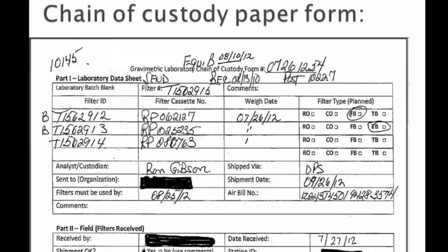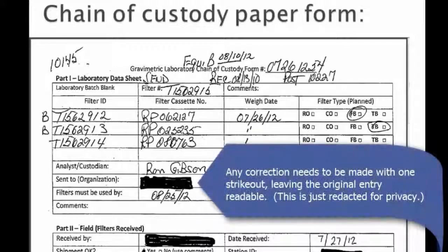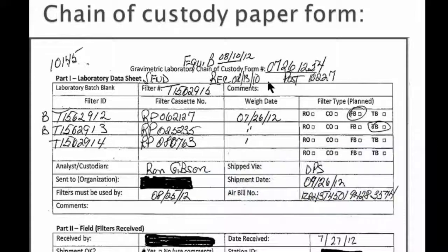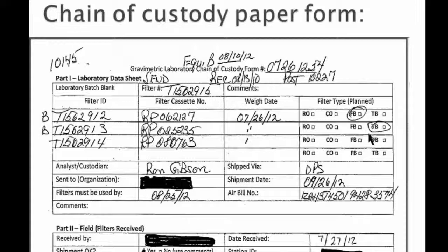There's something wrong with the form as filled out. It describes filters that were sent to the Navajo Nation, and you can see there are lots of scribbles on here — and that's fine. They're all legible. We've got filter IDs, the filter cassette number that the filter was snapped into, the date it was weighed. This is actually a field blank filter.